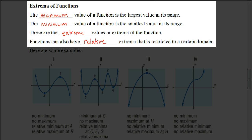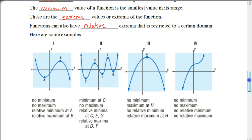Sometimes there is no maximum or minimum values. Instead, we need to look at what we call relative extrema. That means those are situations where when we restrict the domain, we may have other relative minimum or relative maximum values, which we'll look at in these examples.